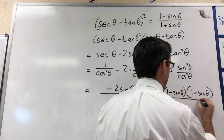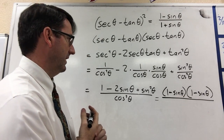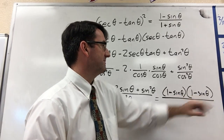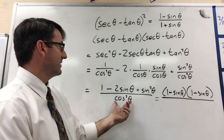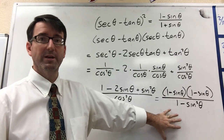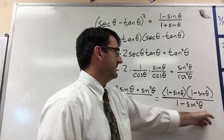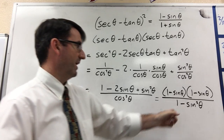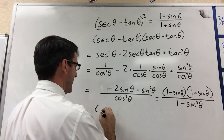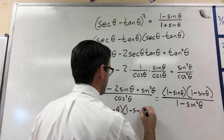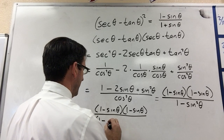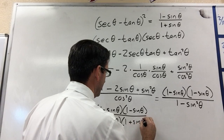I'll keep it written as the product for now. Notice we've got 1 minus sine theta times 1 minus sine theta, and we've got a 1 minus sine theta that we're trying to get to. This cosine squared in the denominator — we can rewrite that as 1 minus sine squared theta. Now we're looking really close to the end. Let's factor 1 minus sine squared theta: that is a difference of squares. 1 is a perfect square, sine squared is a perfect square, so we can factor that. Keeping the numerator the same, 1 minus sine theta times 1 minus sine theta, and in the denominator it factors as 1 minus sine theta times 1 plus sine theta.